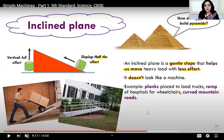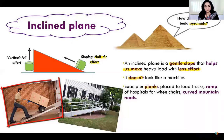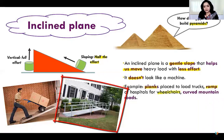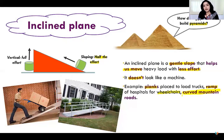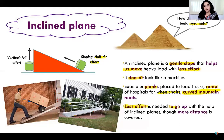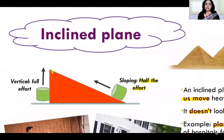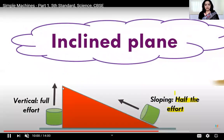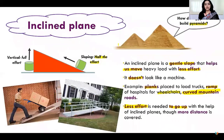Examples of inclined planes include planks placed to load trucks, ramps in hospitals for wheelchairs, and curved mountain roads. With an inclined plane, though more distance is covered along the slope, your effort is reduced to about half. Less effort is needed to go up with an inclined plane even though more distance is covered. In the diagram you can see how the sloping distance increases while the effort required decreases — this is the basic function of the inclined plane.